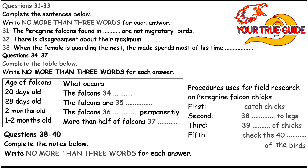Unlike their parents, which have learned how to hunt, the young falcons are not good at feeding themselves, and so during the first year, about 60% of them die. Once the birds have managed to live to breeding age, at two years old, they generally go on to live for another six or seven years.